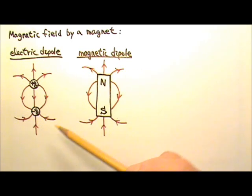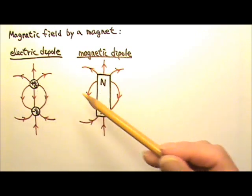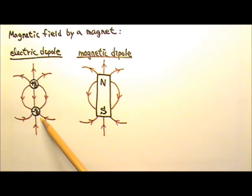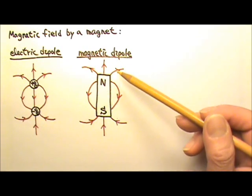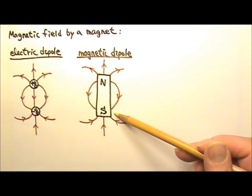It is kind of like an electric dipole. The north pole is kind of like the positive Q, the south pole is kind of like the negative Q. So the magnetic field lines come out of the north and into the south, except for one very important difference.